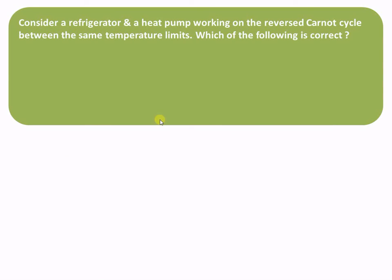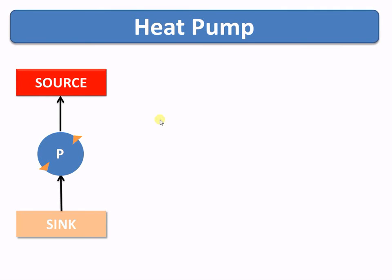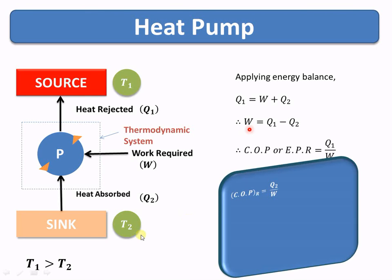Now suppose we have a refrigerator and heat pump working on the reverse Carnot cycle, and we have to find the correct sentence from the given four options. To answer this, we need to understand the working of the heat pump. Considering the heat pump as a thermodynamic system, Q1 is the heat rejected, W is the work required, and Q2 is the heat absorbed. From energy balance: Q1 equals W plus Q2, so W equals Q1 minus Q2. The coefficient of performance or energy performance ratio of the heat pump is Q1 divided by W.